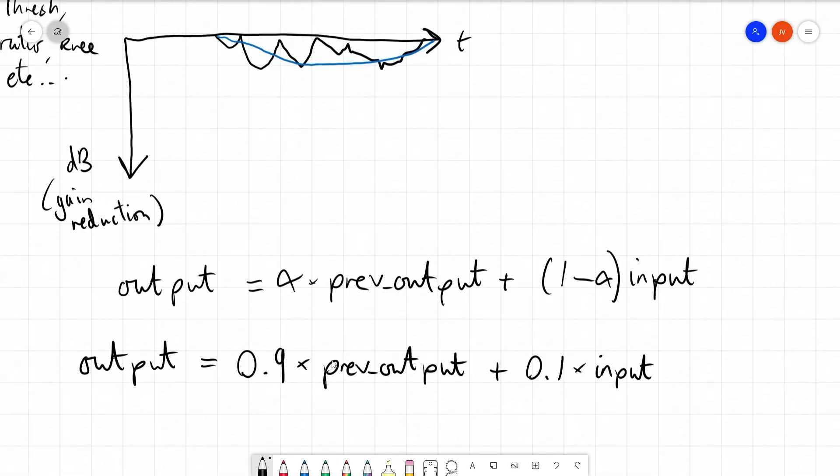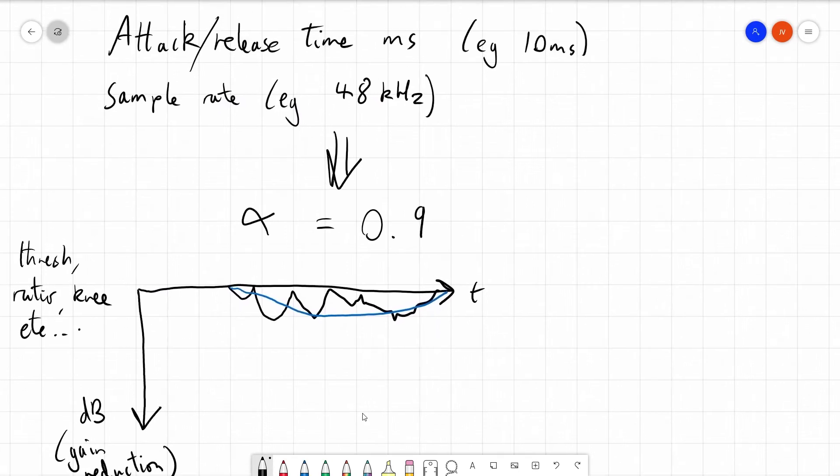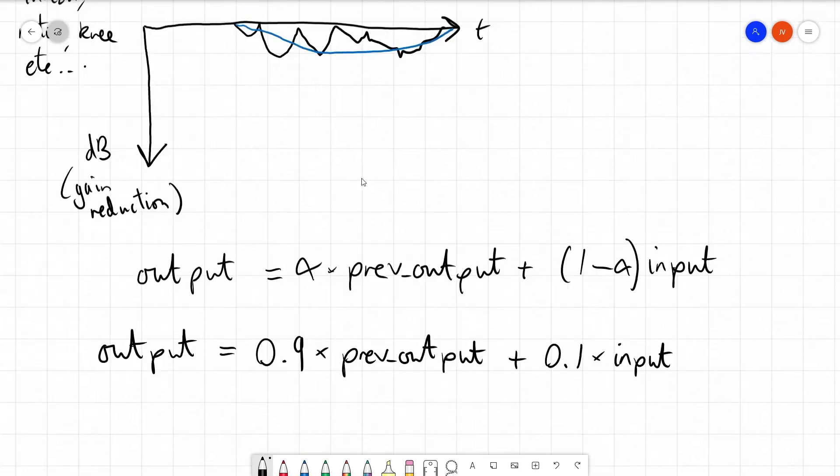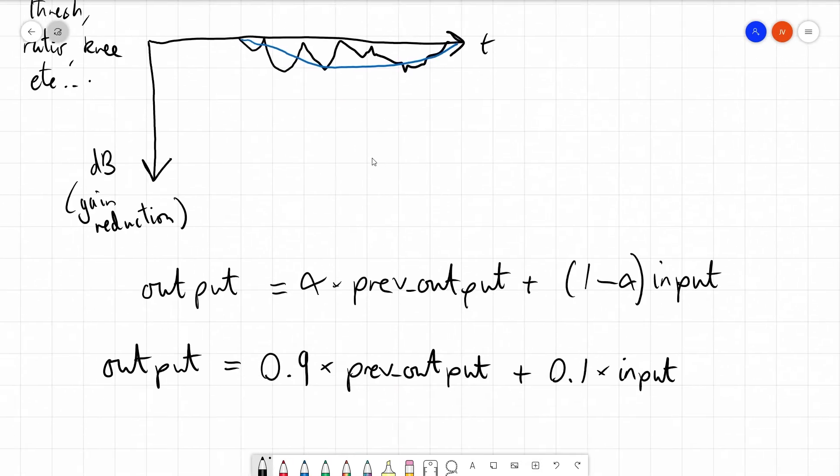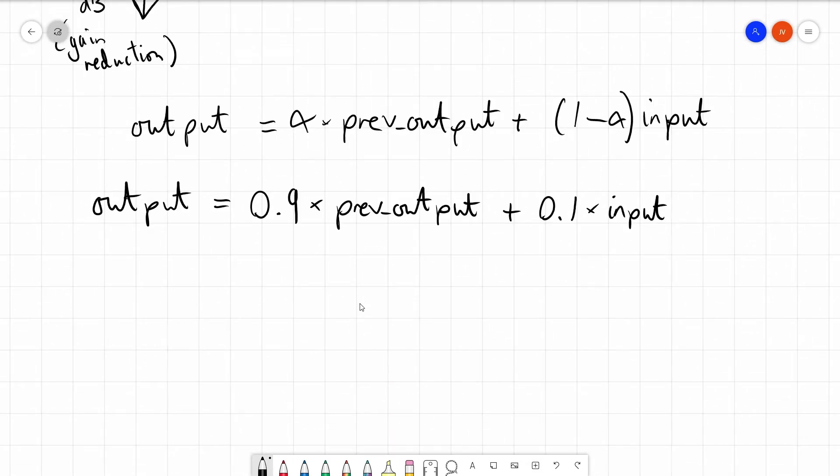But the problem is, we've got one alpha, but we want separate attack and release times. But here, we're using an alpha which controls both the attack and the release. So we'll solve that problem in a minute.